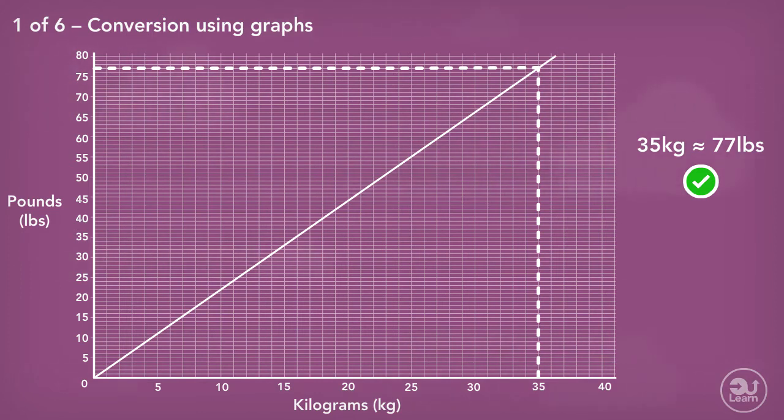The reverse also works. Let's convert 50 pounds to kilograms. We start from the pound axis where 50 is, then draw a horizontal line until the conversion line is touched. This is immediately followed by a vertical line down to the kilograms axis. 50 pounds is approximately 22.7 kilograms.